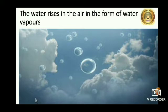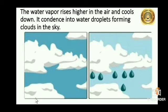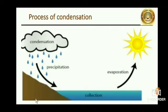The water rises in the air in the form of water vapor, then moves further up away from the earth's surface due to the temperature of gas. The water vapor rises higher in the air and cools down. It condenses into water droplets forming clouds in the sky. In the sky, the water vapor cools and changes back into tiny droplets. This change of water vapor into water droplets is called condensation.